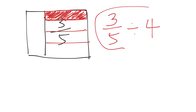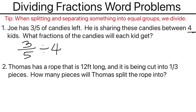So the setup is three-fifths divided by four. When dividing a fraction by a whole number, we need to first convert the whole number to a fraction so we can divide them. Three-fifths divided by four over one. Whenever we are converting a whole number to a fraction, we add a denominator of one underneath it — that doesn't change the value. It still remains four, as four over one is still four.